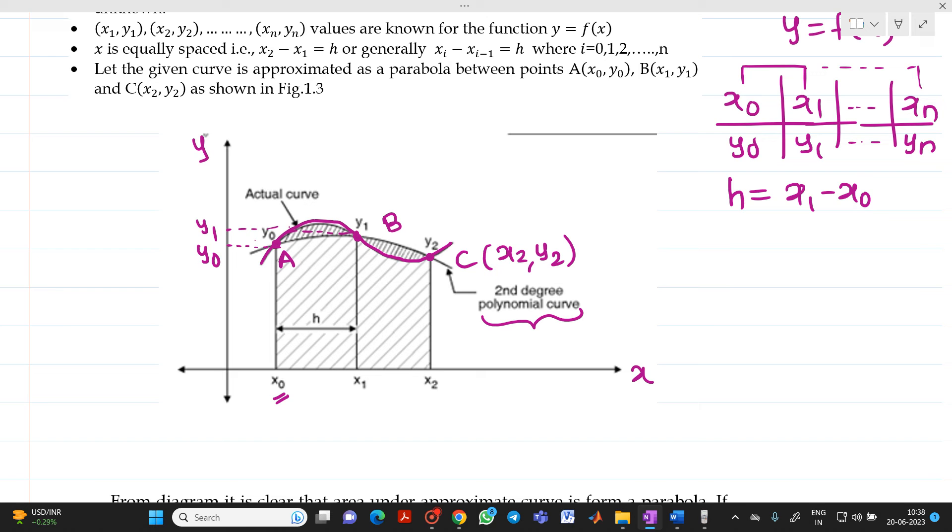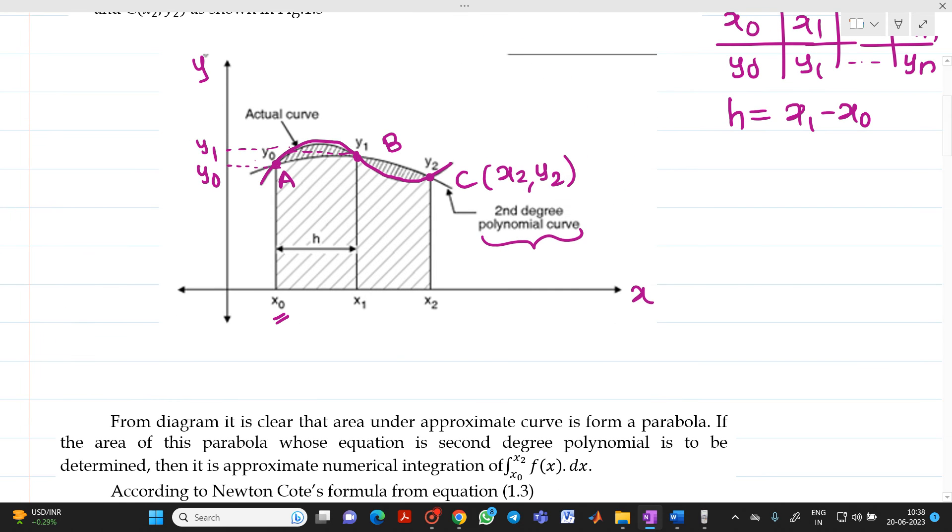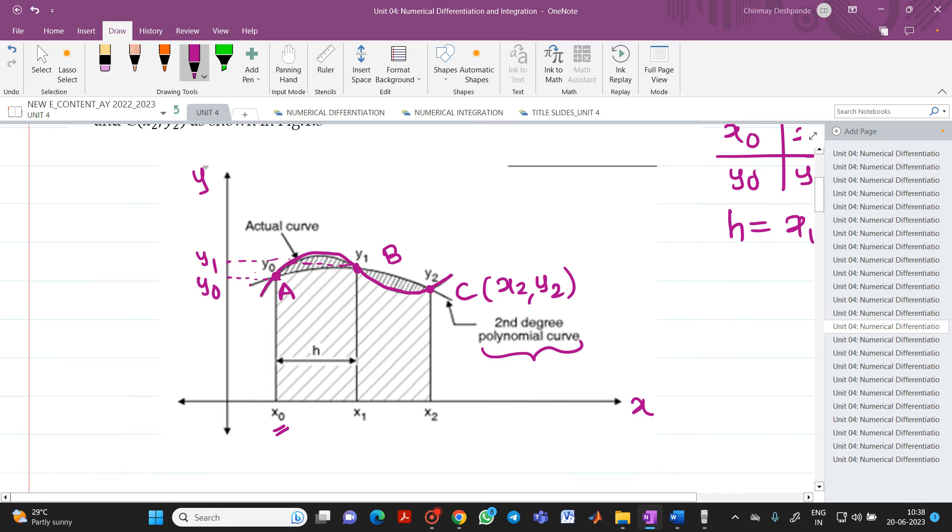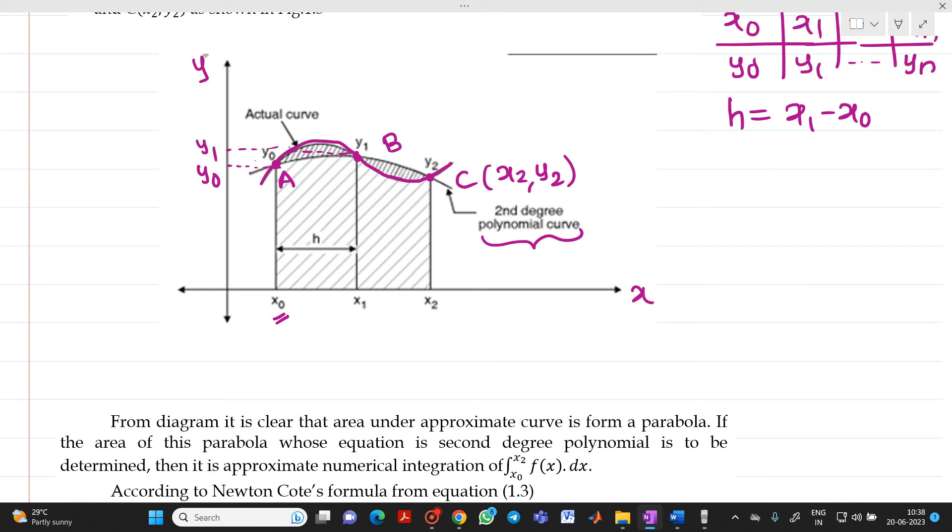The curve is approximated by the parabola. So, from the above diagram, it is clear that the area under the approximate curve is a parabola. Now, what we did, we just divided this curve like this. So, if you see, whatever green color curve I am showing, this is nothing but your curve approximated as a parabola. Because we are taking this as one point, this as another point, this will be the third point. So, you will get a shape like this. And this will be your parabola.